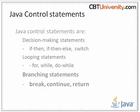If true, execute the condition; else, jump to the end of the if-then statement. Java control statements are: if-then, if-then-else, and switch — these are decision making statements. For, while, and do-while — these are looping statements. Break, continue, and return — these are branching statements.